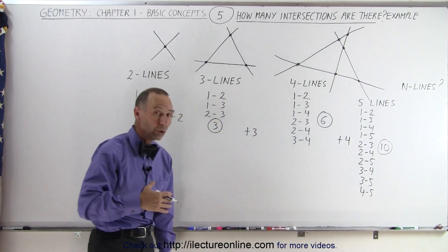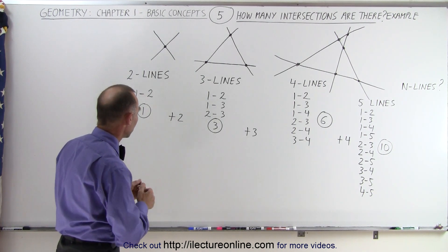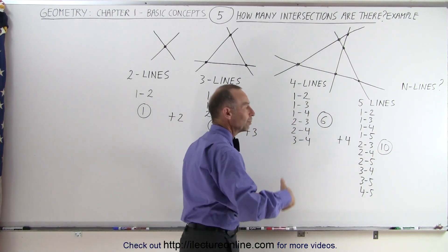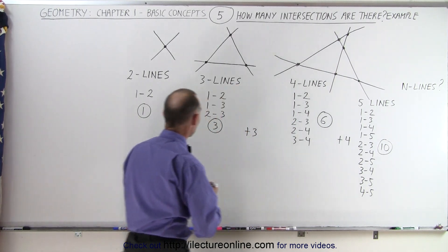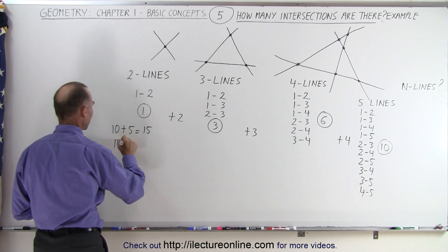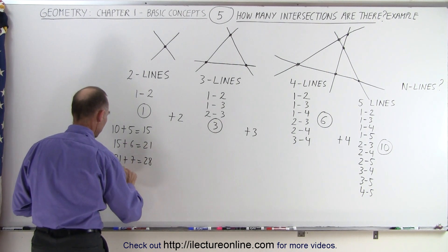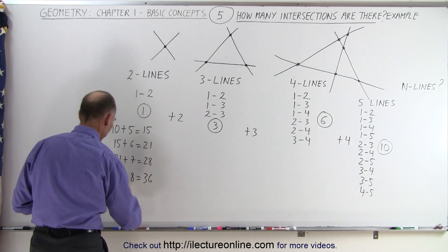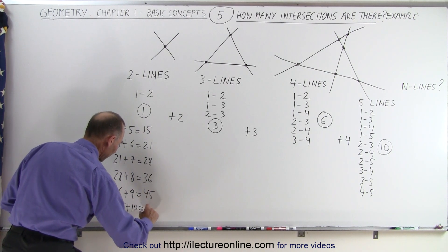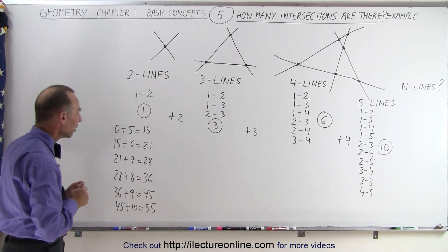Each time we go to one more line, we increase the previous number of intersections by one more. So here we have 1 plus 2 gives us 3, 3 plus 3 gives us 6, 6 plus 4 gives us 10, then 10 plus 5 is 15, 15 plus 6 is 21, 21 plus 7 is 28, 28 plus 8 is 36, 36 plus 9 is 45, and 45 plus 10 is 55.